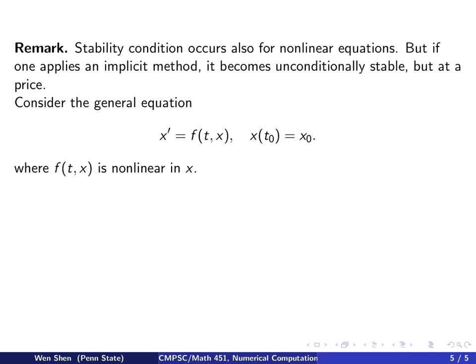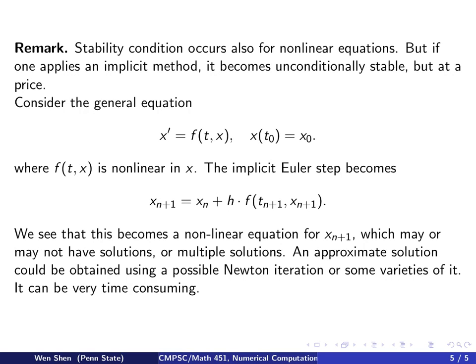Consider the general equation x' = f(t,x), x(t_0) = x_0, where f(t,x) is nonlinear in x. The implicit Euler step becomes x_(n+1) = x_n + h·f(t_(n+1), x_(n+1)). This is a nonlinear equation for x_(n+1), which may or may not have solutions, or multiple solutions. An approximate solution could be obtained using a Newton iteration or similar methods. It can be very time consuming.